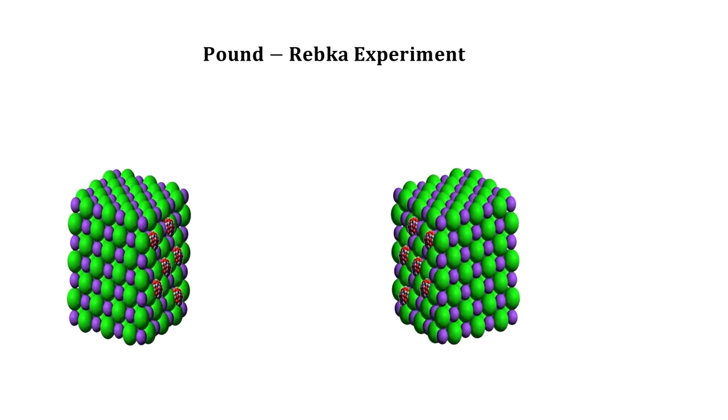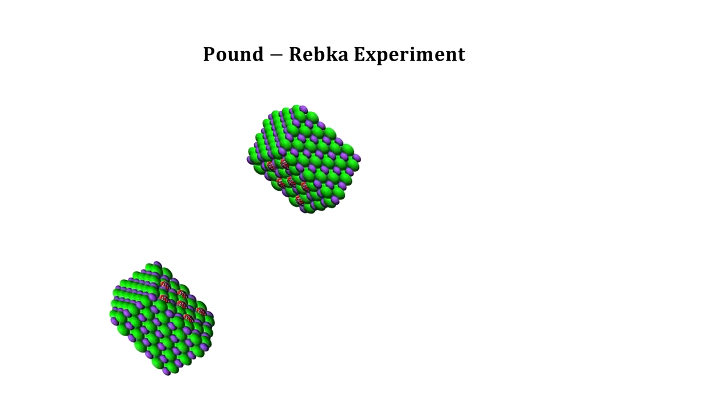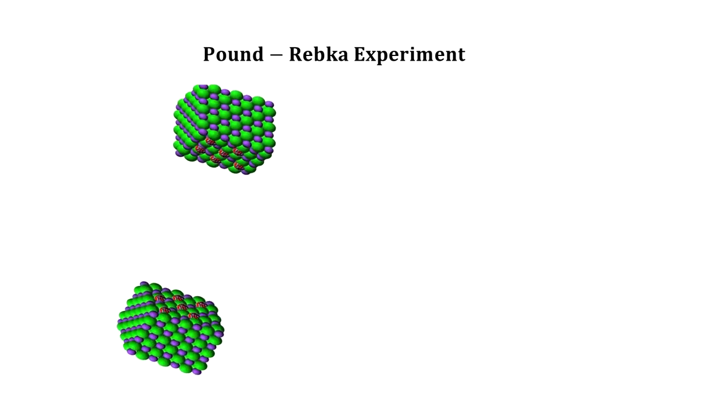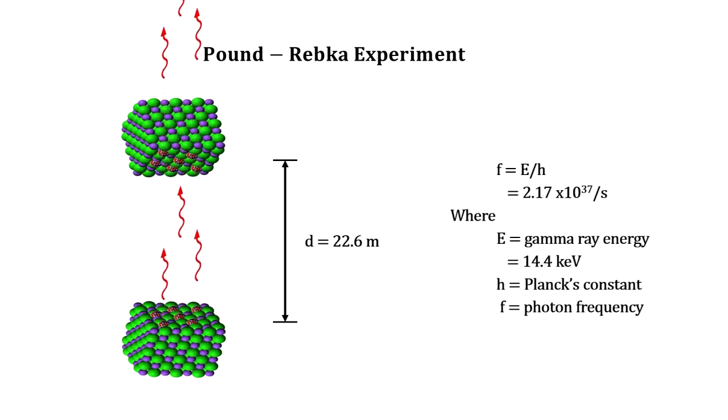Pound-Rebka used this Mossbauer effect. They placed an emitter at the bottom of a tower in the laboratory and installed a detector 22.6 meters above it. No absorption was detected because gravitational time dilation changed the frequency of the emitted gamma rays, so no energy match existed in the detector.